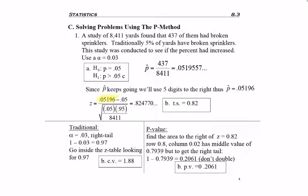So I start off with p-hat minus p, where p is 0.05, divided by the square root of p, the same value we just used, times its complement. So one minus 0.05 is 0.95. 95% of yards do not have broken sprinklers, divided by this sample size, which was the study where the 8,411 yards were used.